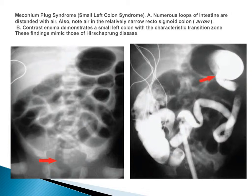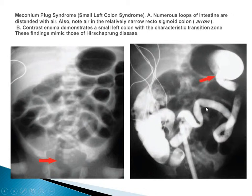Meconium plug syndrome: small left colon mostly occurs in large babies of diabetic mothers. Numerous loops of intestine distended with air and a narrow rectosigmoid junction can be seen. The findings mimic Hirschsprung's disease, but the conditions are totally different in their cause and management.